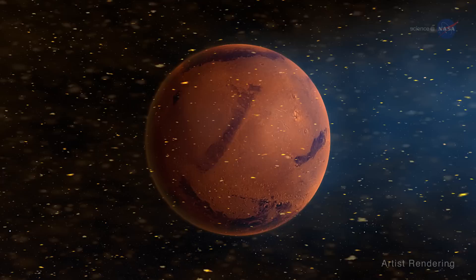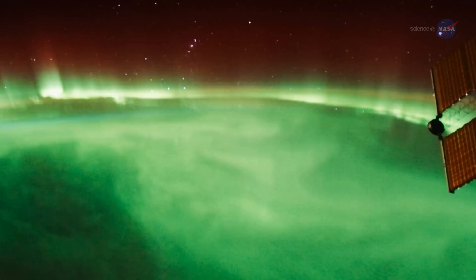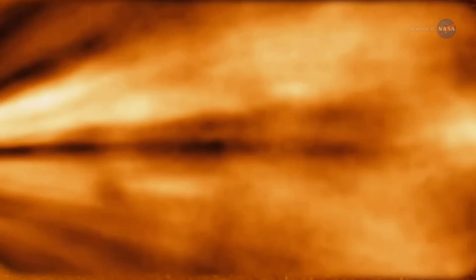It interacts with planetary magnetospheres and atmospheres, which over the eons may have contributed to a planet's habitability. It blankets our spacecraft and astronauts traveling to the moon and Mars. It affects space weather at and around Earth and causes beautiful aurorae.